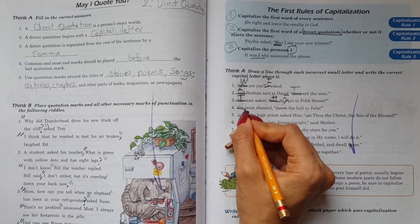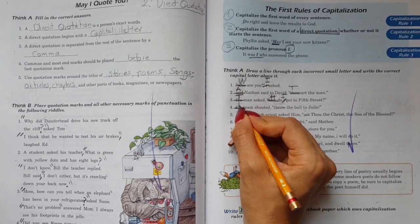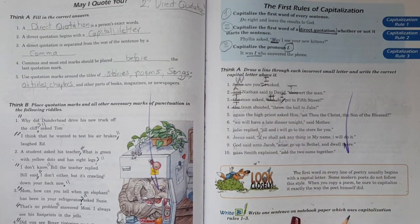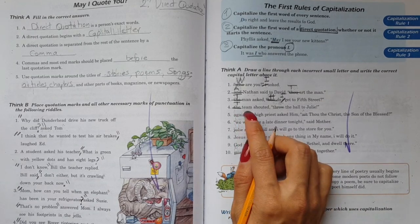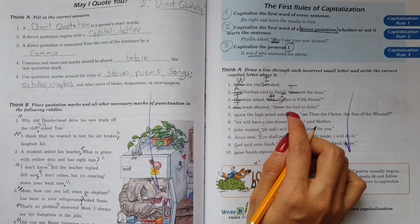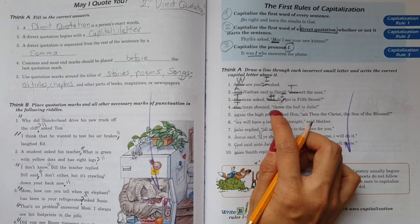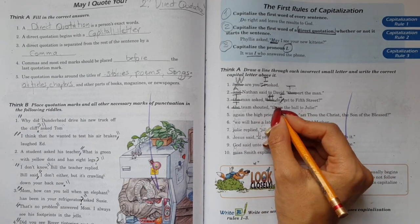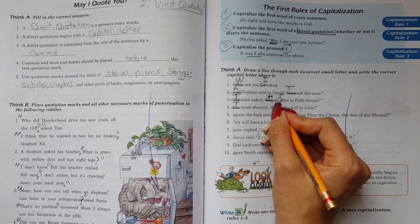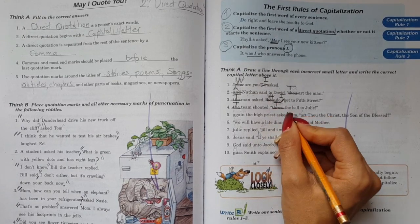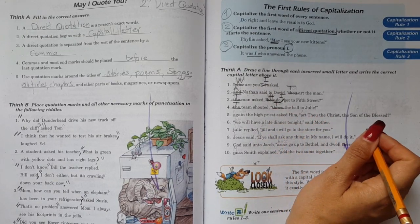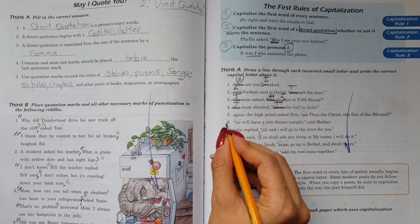The team shouted, throw the ball to Julie. Throw the ball to Julie. So I'm going to cross it out and put a capital T. Throw the ball to Julie.